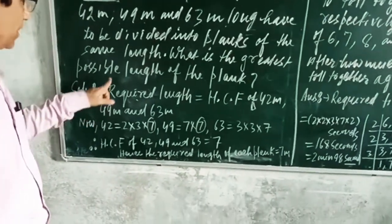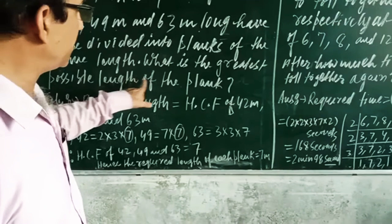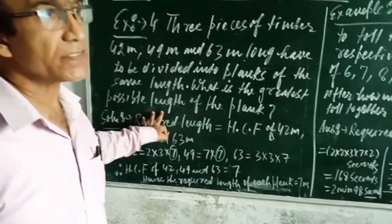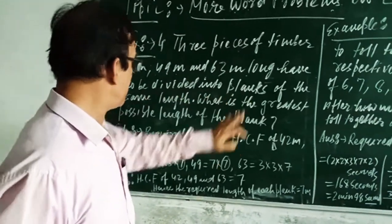Here the question is asking what is the greatest possible length. That is, you have to find the HCF of these three numbers.